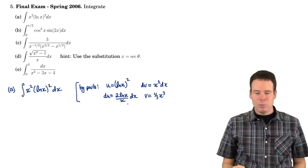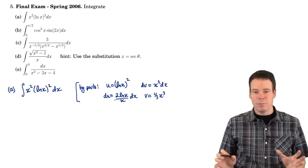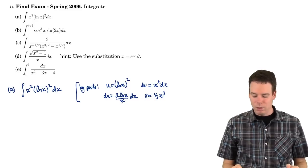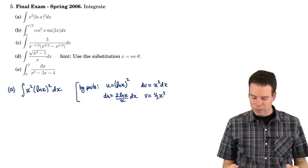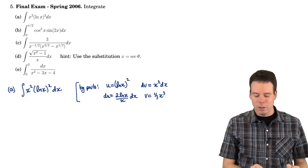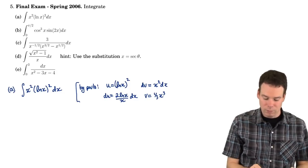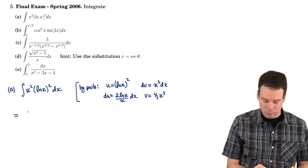Have I made any progress? I'm going to reduce this to a problem where I have to look at the integral of v du. If I look at the product of v and du, it's going to be an x squared times a log. I started with an x squared times a log squared, and now I'm reducing it to an x squared times a log. It seems I've made progress — I've reduced the power on the logarithm.